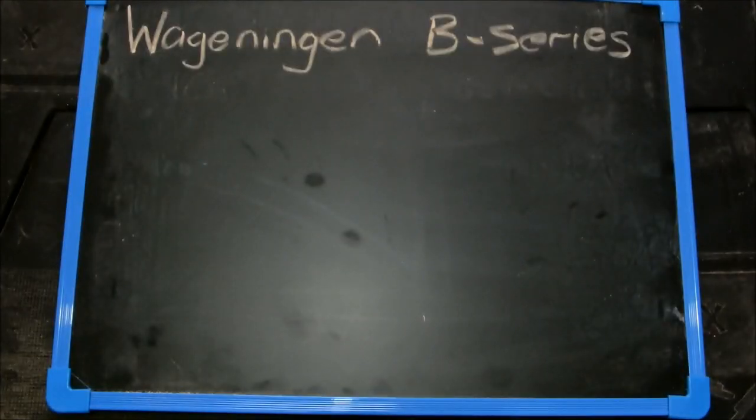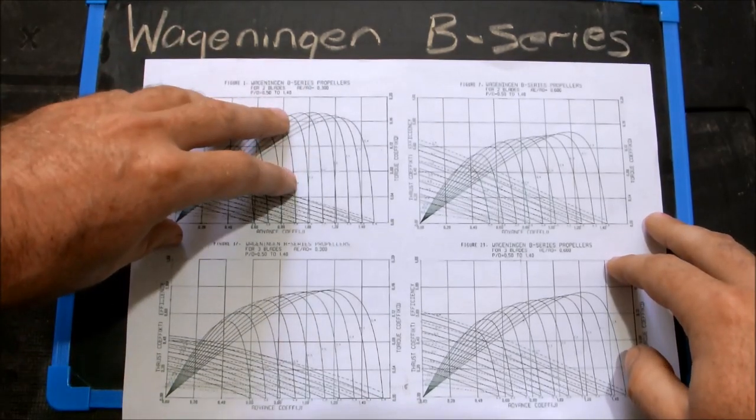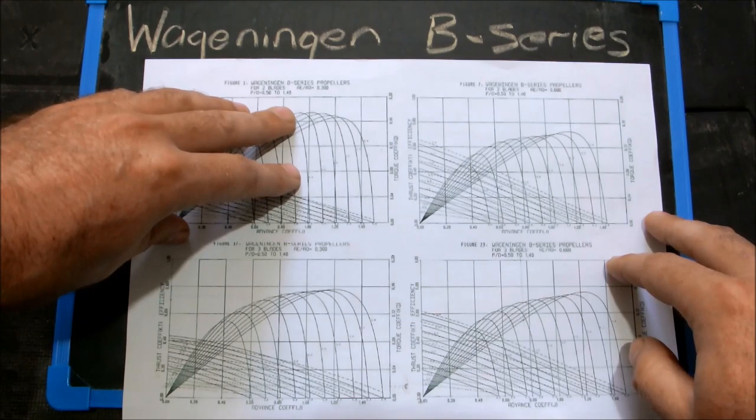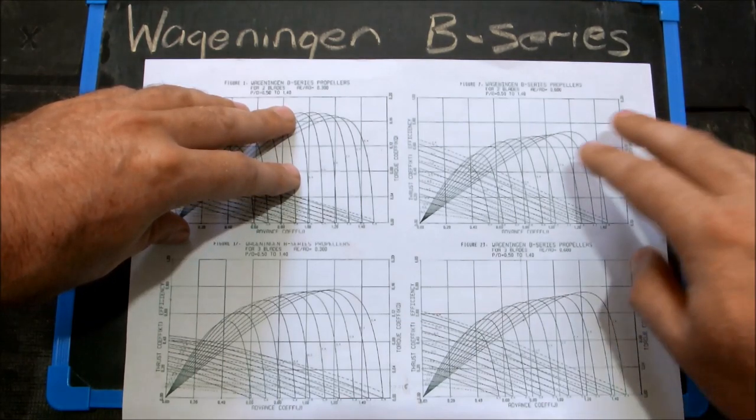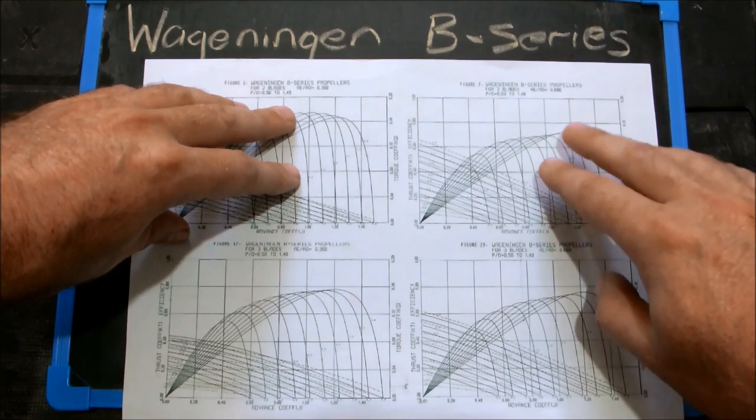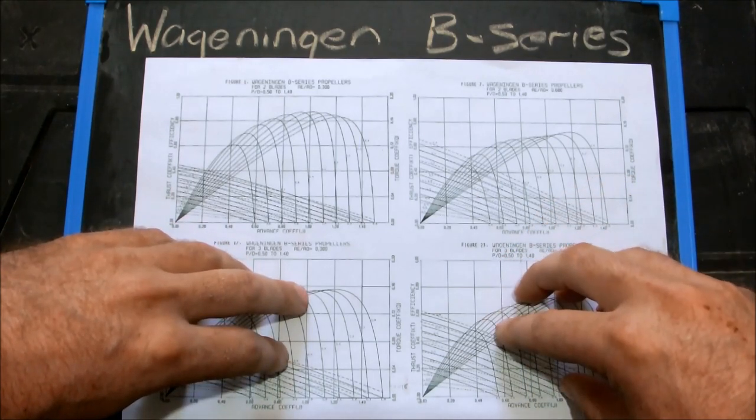That brings me to the Wageningen B-Series. This is a family of propellers that were tested and the data is widely published because it encompasses an incredibly large range of propellers. They present the test results as curves grouped in families and they group them by blade count and area ratio. So this is an example of a two blade with an area ratio of 0.3. This is two blade and an area ratio of 0.6. So this one has double the blade area but still only two blades. And then moving down to this. This is three blades with an area ratio of 0.3 and area ratio of 0.6.